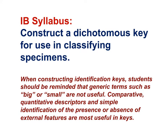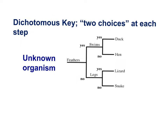Here is the last IB syllabus statement of the movie: construct a dichotomous key for use in classifying specimens. When constructing identification keys, generic terms such as 'big' or 'small' are not useful. Comparative quantitative descriptors and simple identification of the presence or absence of external features are most useful. In this example dichotomous key, two choices are offered at every step. Starting with an unknown organism: does it have feathers? Yes or no. Does it swim? Does it have legs? For example: no feathers, has legs — the organism is a lizard. Avoid vague terms such as large, small, dark, light.